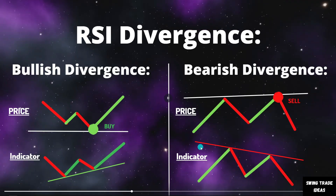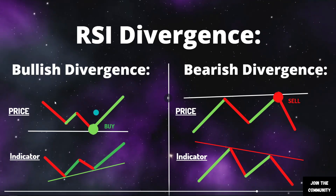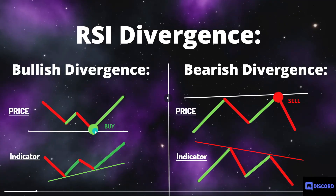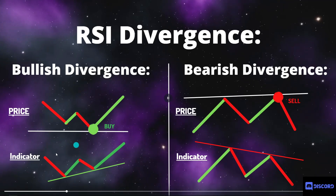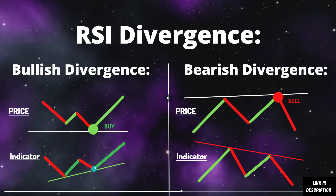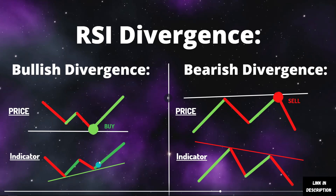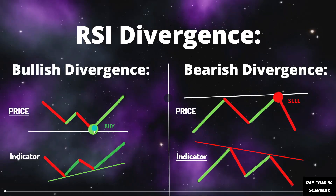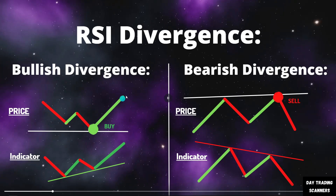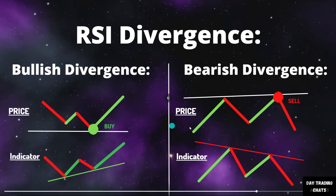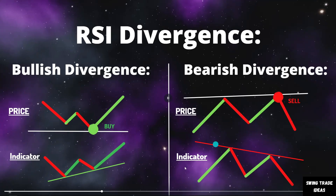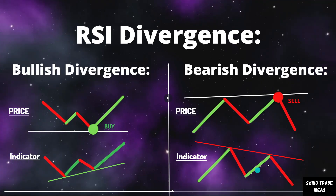What we can see here is that the price was making new lows while the RSI was making higher lows, signaling a divergence in price. This is a possible entry to go long. Again, if we combine this with other signals, this is a possible long entry. The opposite applies for bearish divergence: if price is making new highs while the RSI indicator is making new lows, that can signal the price will then reverse and make lower lows.